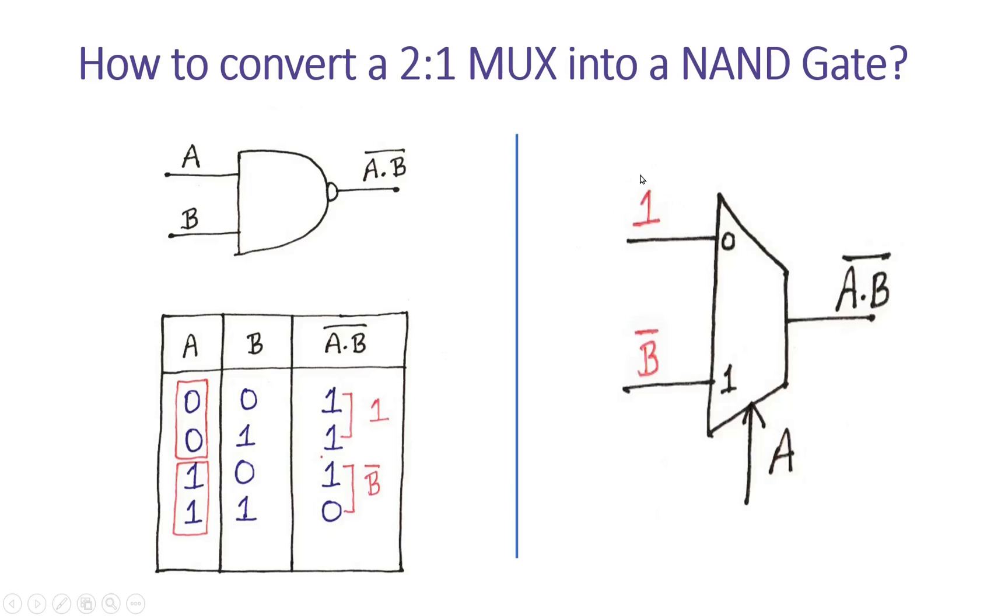When A is one, I know that I1 will be passed at the output of the 2:1 multiplexer. Let us see what the expected output is. The expected output is B bar.